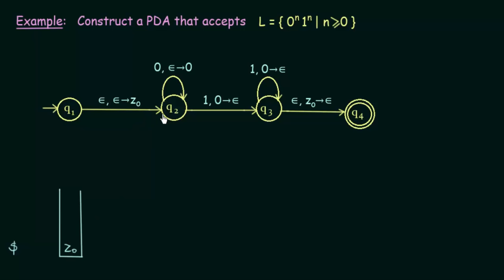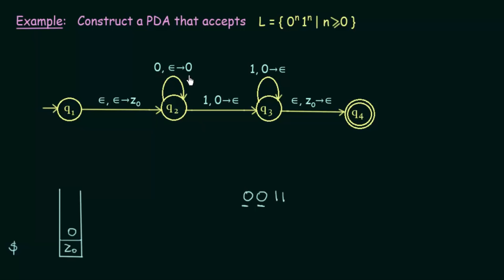Then we come to state Q2. In Q2 we can get input 0 or input 1. For the example string 0011 — accepted because it has two zeros and two ones — when we get the first input 0, we don't pop anything from the stack but we push 0 onto it. When we get the next 0, the same happens: input is 0, nothing is popped, and that 0 is pushed onto the stack.